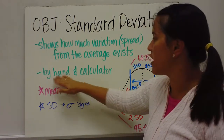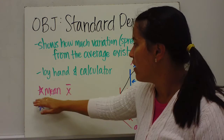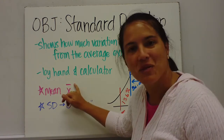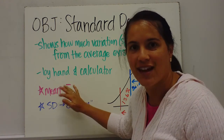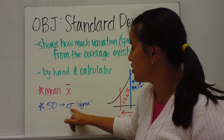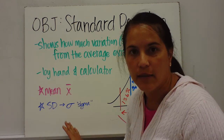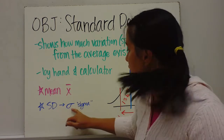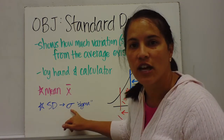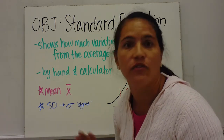We're going to find the standard deviation by hand and by calculator. The mean is denoted with an X with a bar over it. Standard deviation is represented by the lowercase sigma symbol — if you see that symbol, that is the standard deviation.